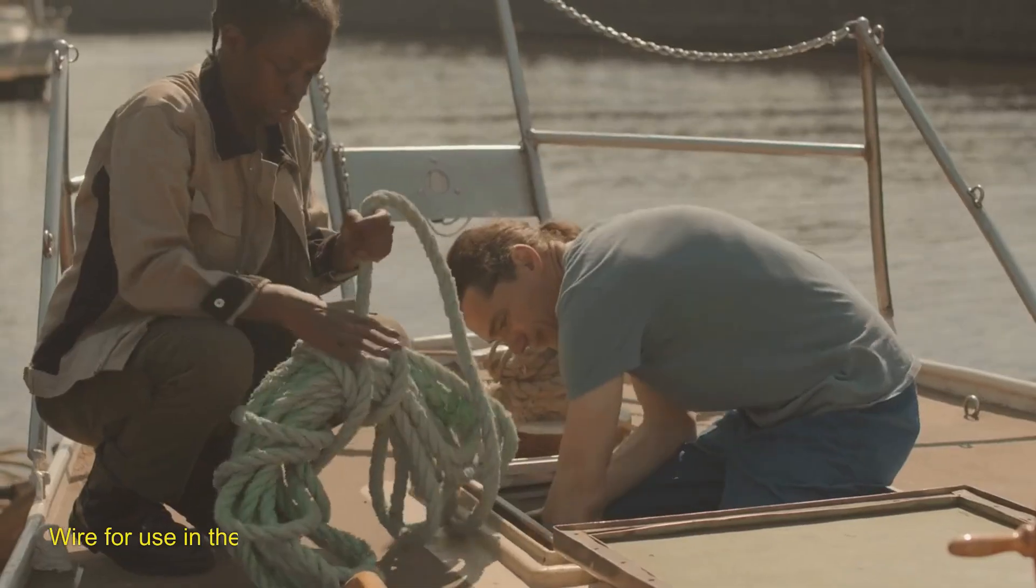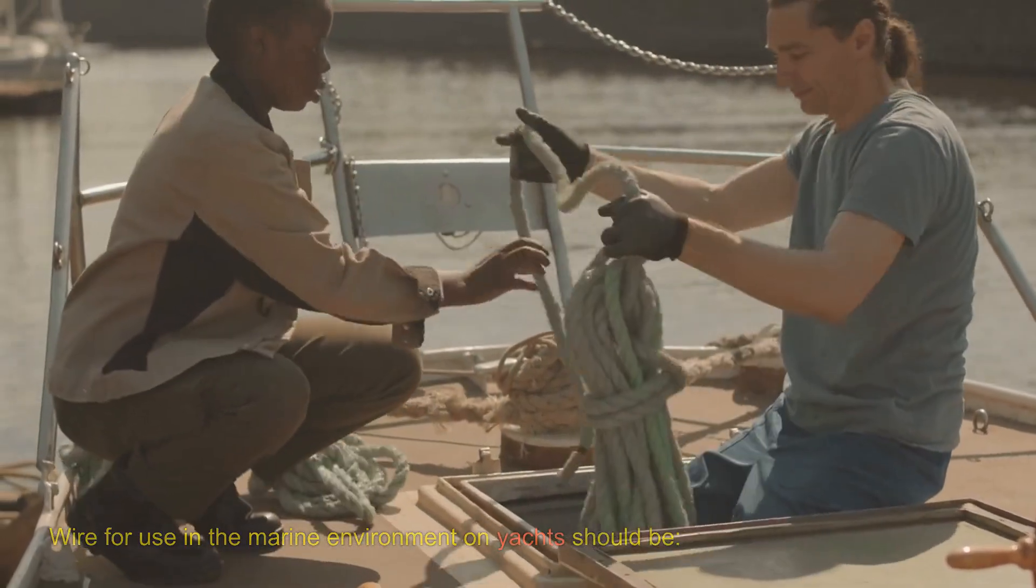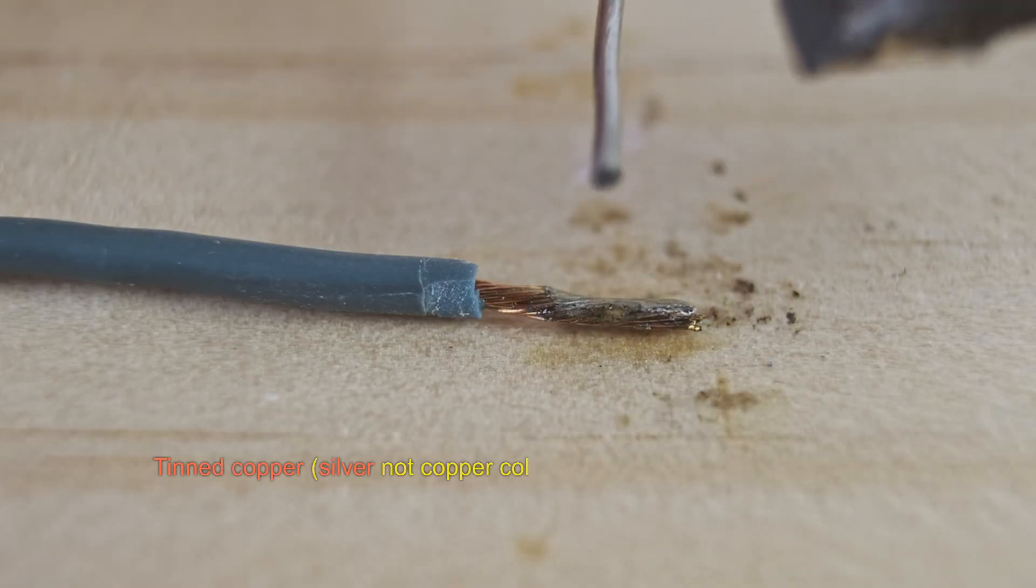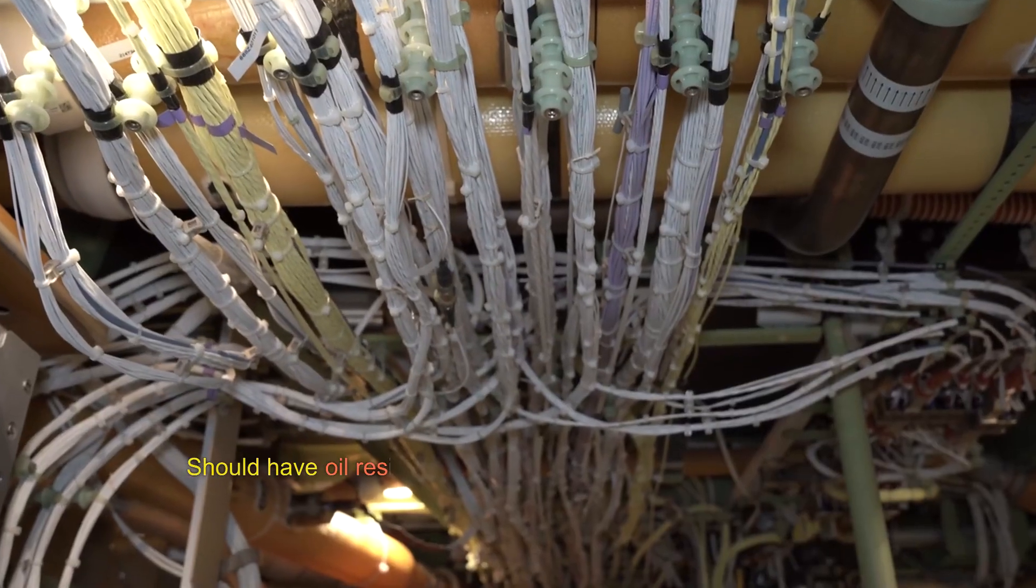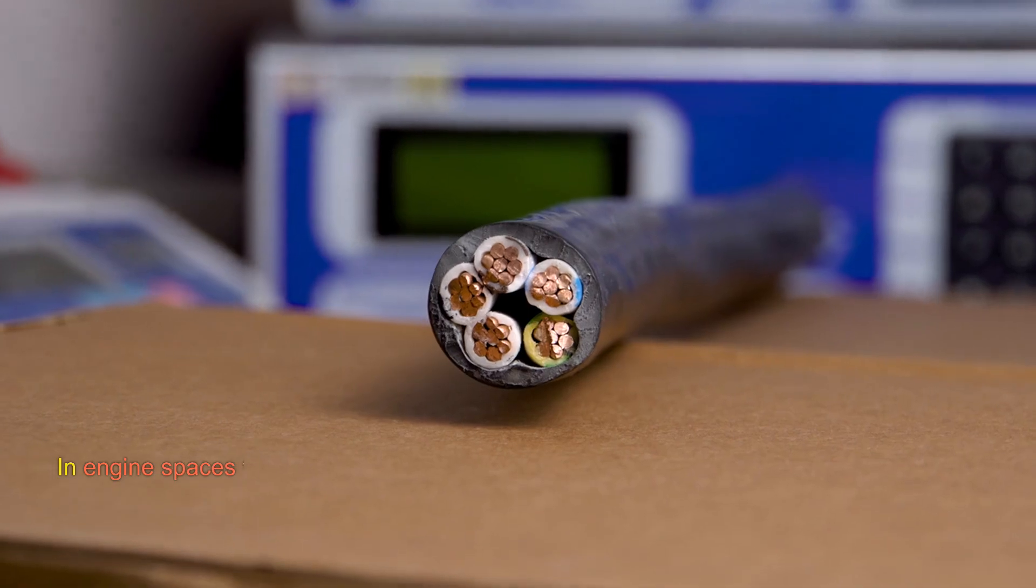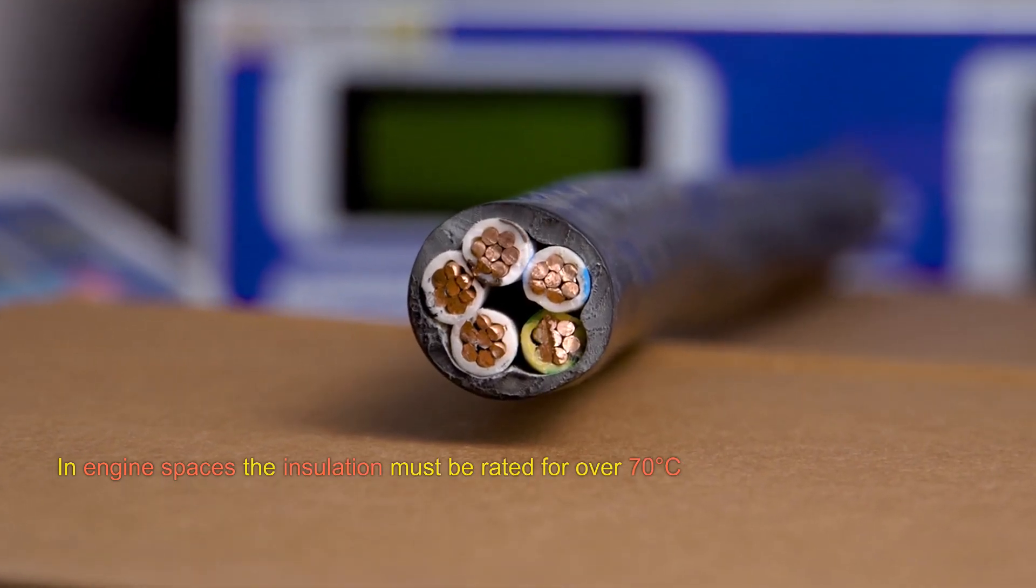Wire. Wire for use in the marine environment on yachts should be tinned copper (silver, not copper-colored), multi-stranded (not solid), should have oil-resistant insulation. In engine spaces, the insulation must be rated for over 70°C.